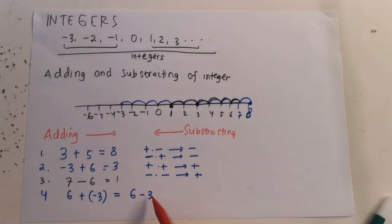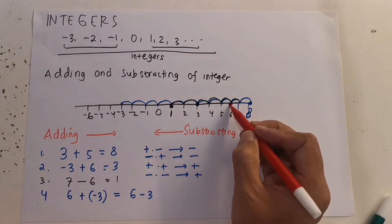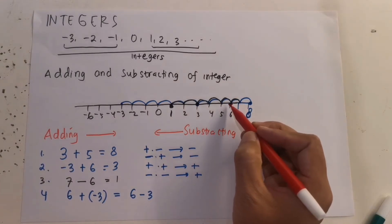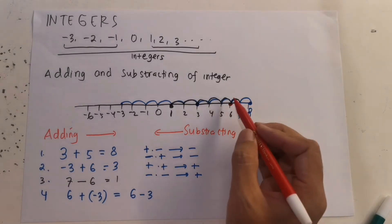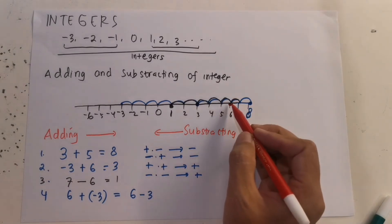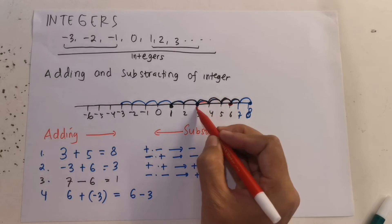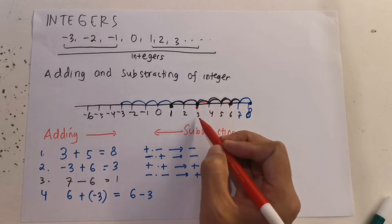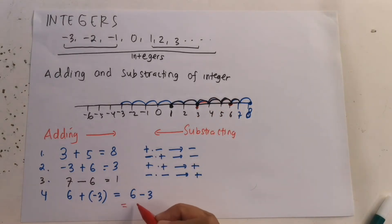So 6 minus 3: we start from number 6. Because this is minus 3, we move 3 places to the left — 1, 2, 3 — and we end at number 3. So the answer is 3.